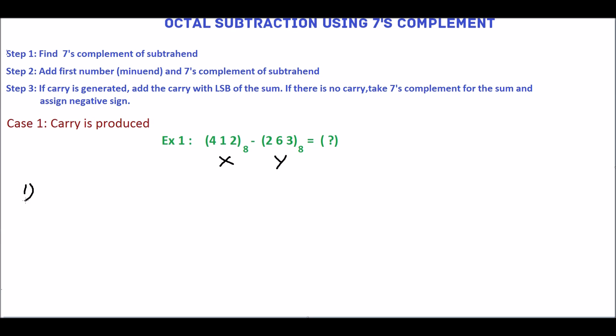To find the 7's complement, subtract each and every digit from 7. 7 minus 3 is 4, 7 minus 6 is 1, 7 minus 2 is 5. 514 is the 7's complement.